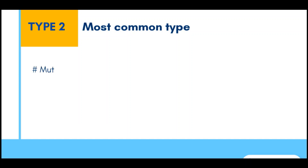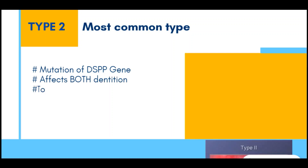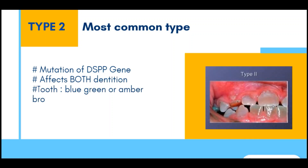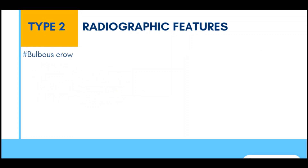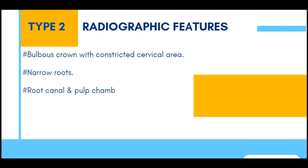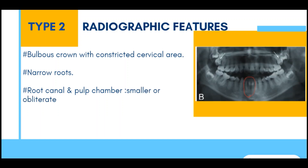Type 2 is the most common type and occurs due to mutation of the DSPP gene. It affects both dentitions, and the teeth appear blue-green or amber-brown and opalescent. Radiographically, it shows a bulbous or bell-shaped crown with a constricted cervical area, narrow roots, and root canals and pulp chamber that are smaller and completely obliterated. When subjected to occlusal stress, enamel may split from dentine.